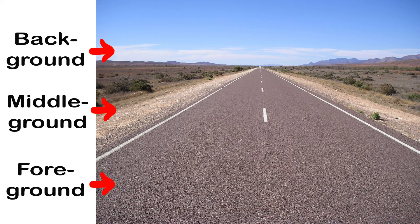The terms foreground, middle ground, and background describe the spatial layers of the composition in relation to the viewer. The foreground is the closest to the viewer's space, and the background is the farthest away.